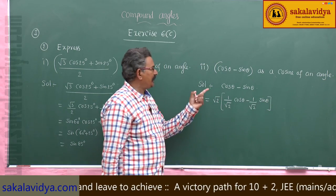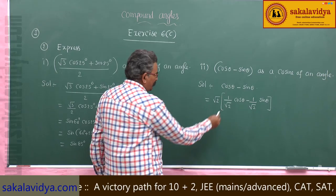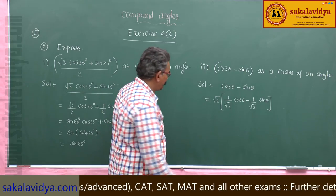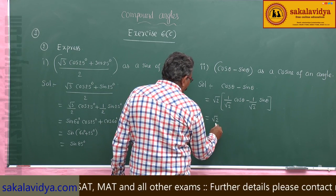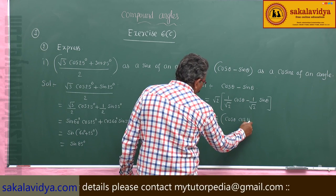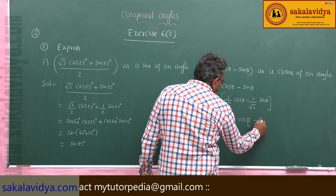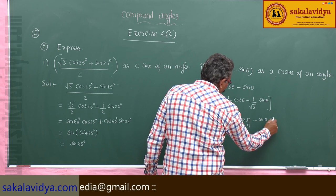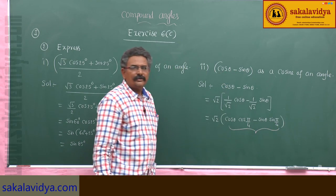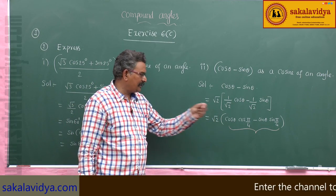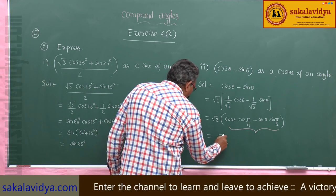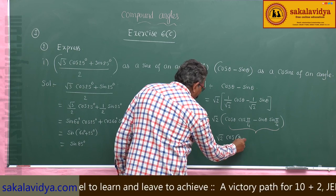In order to express this as a cosine of an angle, 1 by root 2 must be written in terms of cos, and 1 by root 2 in terms of sin. So this is root 2 times (cos θ · cos 45 degrees minus sin θ · sin 45 degrees), or cos(π/4). Observing this, it is in the form of cos A cos B minus sin A sin B, which equals cos(A + B). So this equals root 2 times cos(θ + π/4).